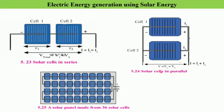Here we have two cells connected in parallel combination. When we studied resistors in parallel, we found that the potential difference across each resistor is the same as the total potential difference in the circuit, and the total current is given by the sum of the currents flowing through individual resistors.